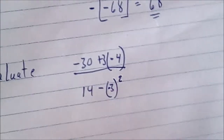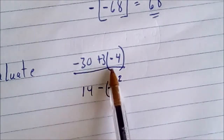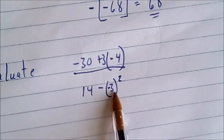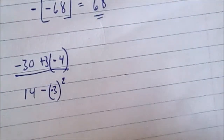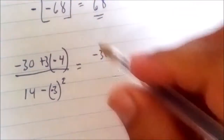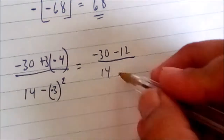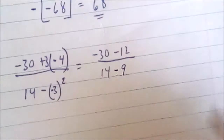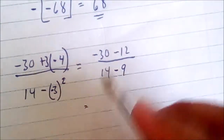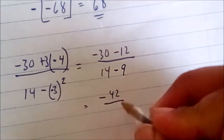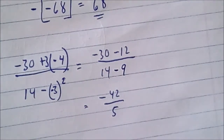Applying PEMDAS: bring down negative 30, then 3 times negative 4 equals negative 12. In the denominator, negative 3 times negative 3 equals 9. So we have negative 30 plus negative 12, which gives negative 42, over 14 take away 9, which gives 5. Our solution is negative 42 over 5.